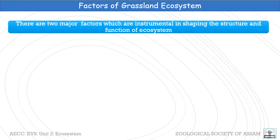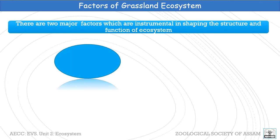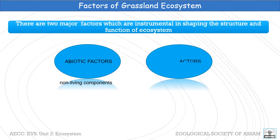There are two major factors which are instrumental in shaping the structure and function of a grassland ecosystem. These include the abiotic factors, which comprise the non-living components, and the biotic factors, which comprise living components.